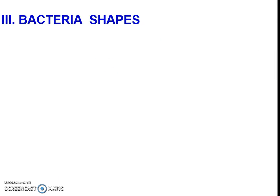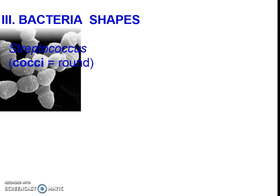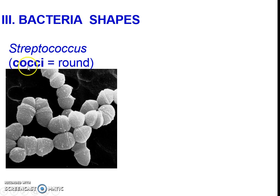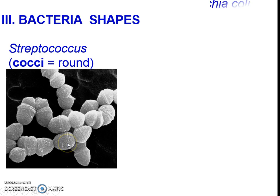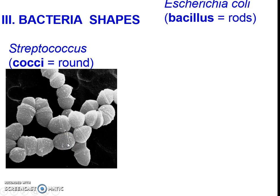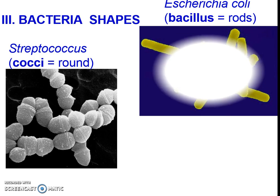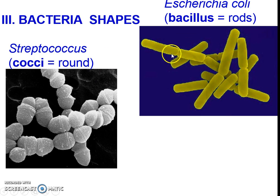Let's look at some bacterial shapes — you do need to know these terms. There are some that are round, which we call cocci. We see it in the scientific name for strep bacteria: streptococcus, or cocci, which means round. Round bacteria are more circular shaped and they kind of go next to one another. They're single-celled and what you see is a colony of them. There are also some called bacillus, which look like rods. They're each a different organism but they connect to form a colony. This is E. coli, which we sometimes hear about in the news.